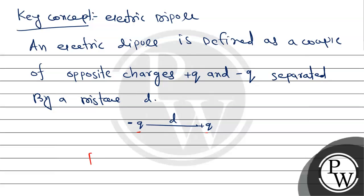The dipole moment is P equals Q into D, and this dipole vector goes from negative charge to positive charge.